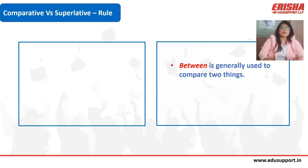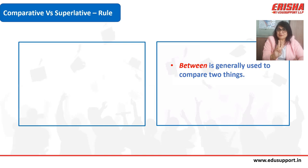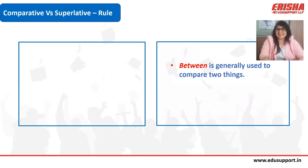Now let's look at the rules of comparative and superlative forms. 'Between' is generally used to compare only two things. So you would say 'between you and me' — this is a confusion for most students, who often say 'between you and I.'